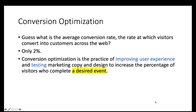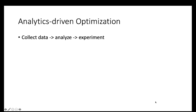The average conversion rate is only 2%, which is why we need conversion optimization. We want to improve the user experience and keep testing our marketing copies and designs so that we can increase the percentage of visitors who complete a desired event — that is, to convert.